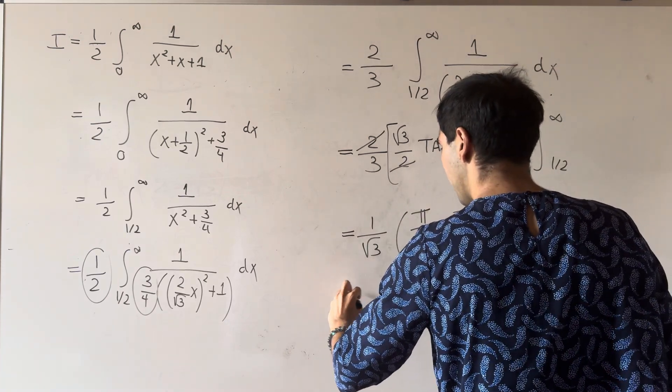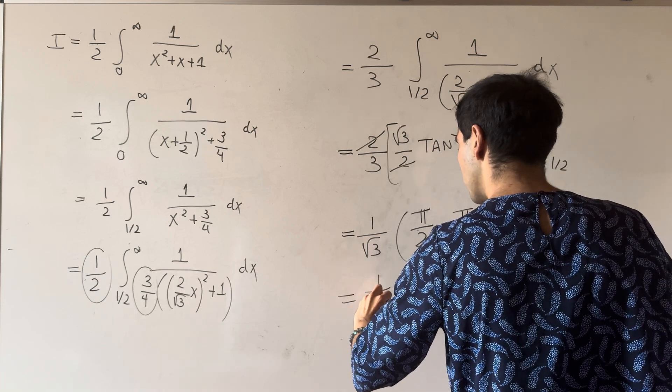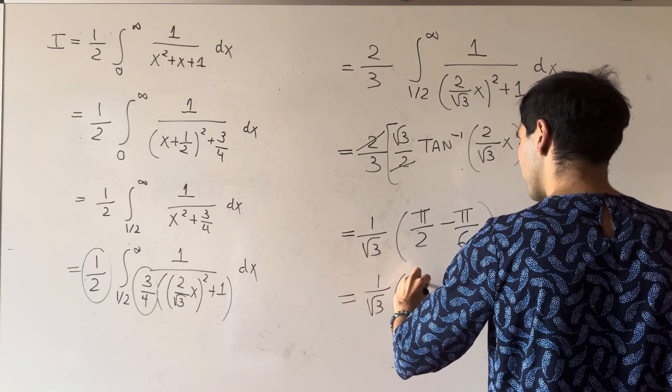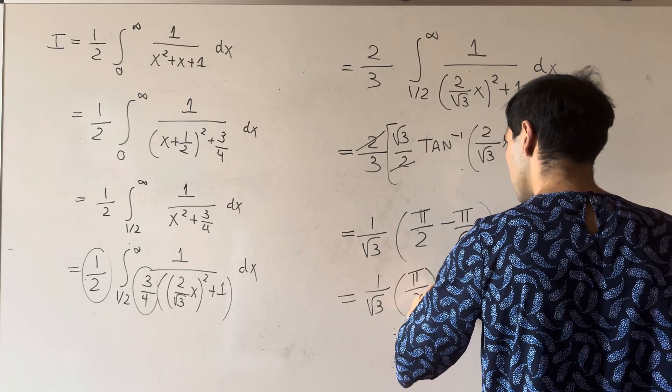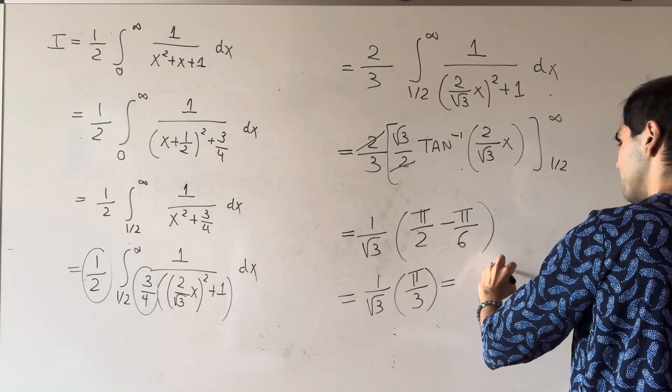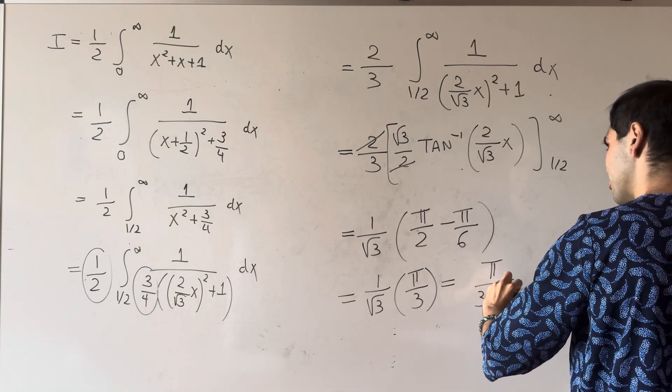And then in the end, we get 1 over square root of 3, and then pi over 3. And so the final answer is pi over 3 square root of 3.